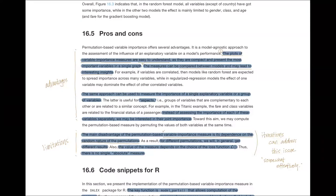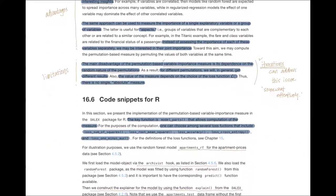That's the reason why iteration is very important in this case. Iteration can address this issue somewhat effectively — not perfectly solving this limitation — but iteration is going to give us some converging mean value of our variable importance measures. We can say this is a range of the loss function differences, and that's going to remove some of the statistical uncertainty of our estimation.